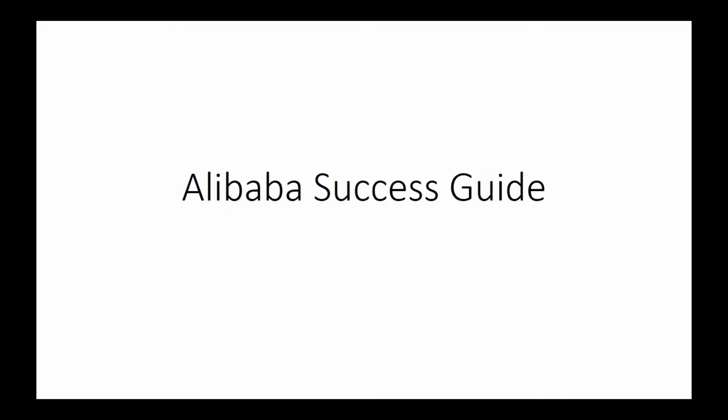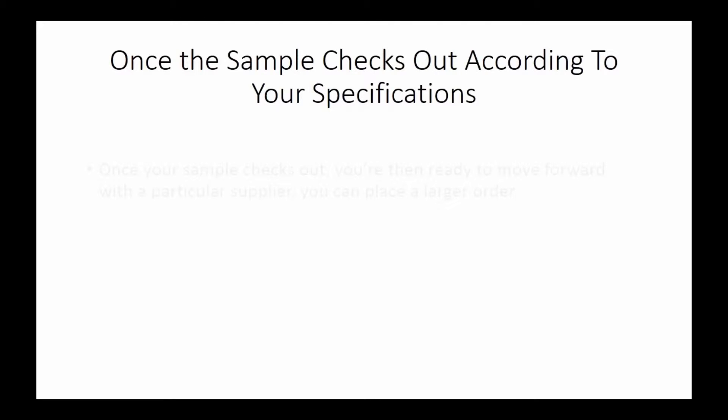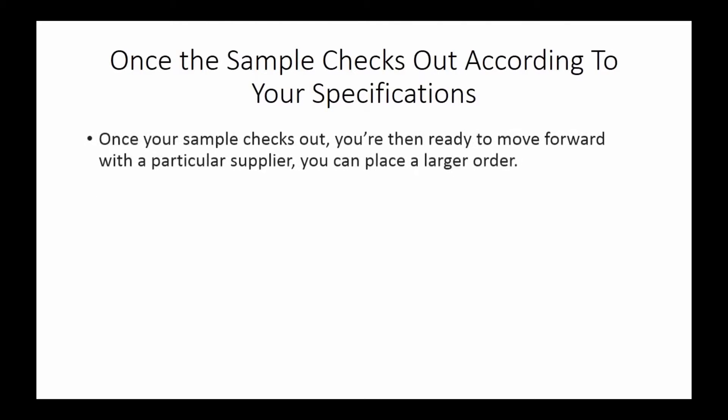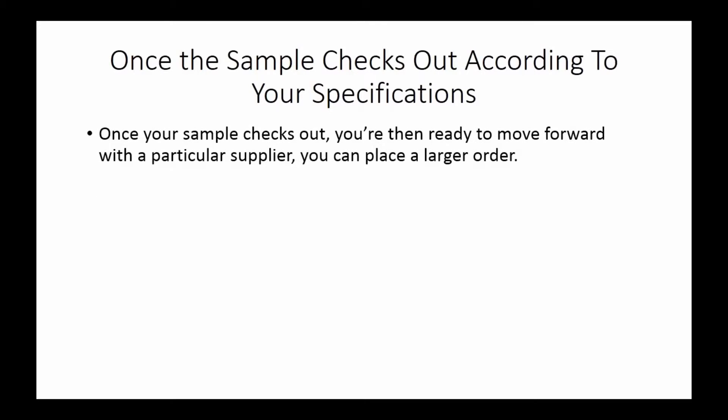Welcome back to the Alibaba Success Guide. In this video we're going to start from the point at which your sample has checked out and you're comfortable with it and want to go forward with this supplier. Once your sample checks out and you've approved it, you're then ready to move forward with a particular supplier so that you can place a larger order for product.